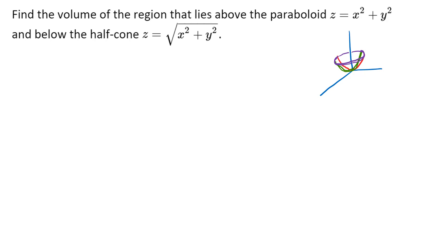We also have a half cone z equals the square root of x squared plus y squared. When I put in x equals zero I get z equals plus or minus y, but z is only ever positive, so z will just be the positive values for y. So z equals positive y is one line and z equals negative y is the line on the other side.